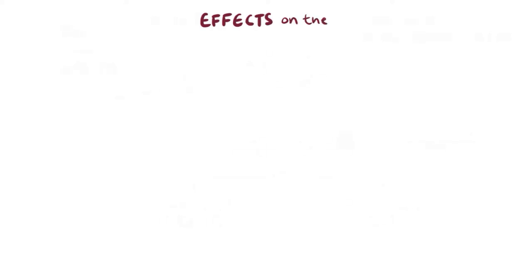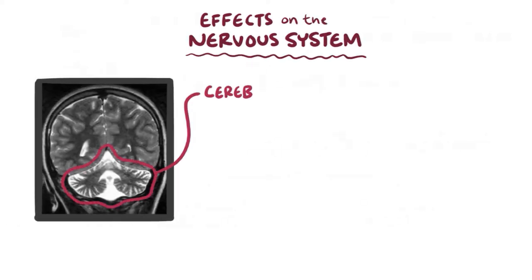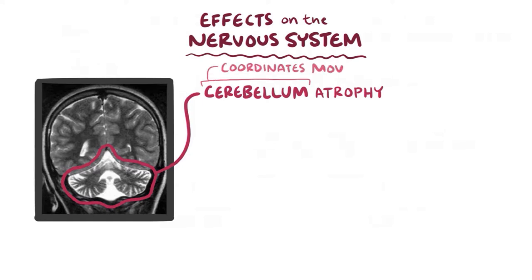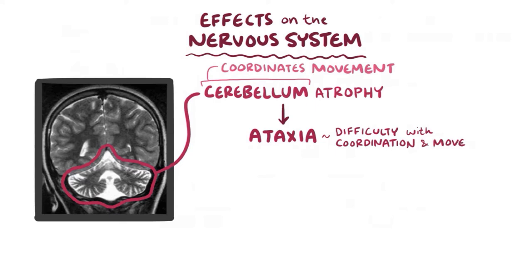Some of those damaged cells might survive and continue to proliferate despite the damage, but most ultimately die off. Now if cells start dying off left, right, and center, that's a big problem. This can especially impact the nervous system, and when the cerebellum is affected it atrophies, and since the cerebellum coordinates movement, this degeneration causes ataxia, or difficulty with coordination and movement, in many individuals with this disease.